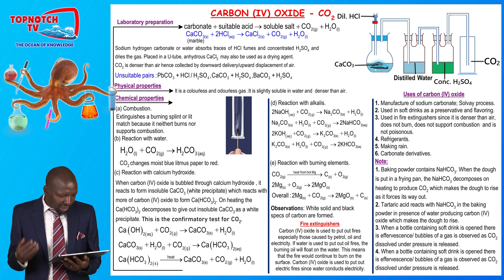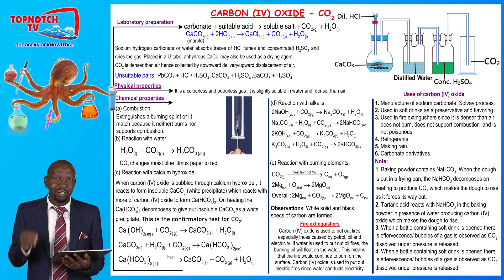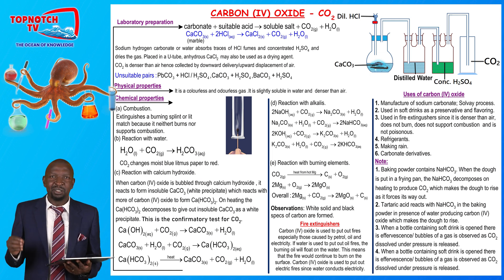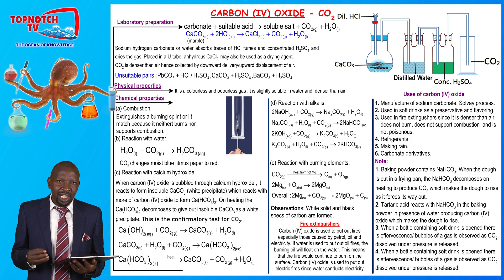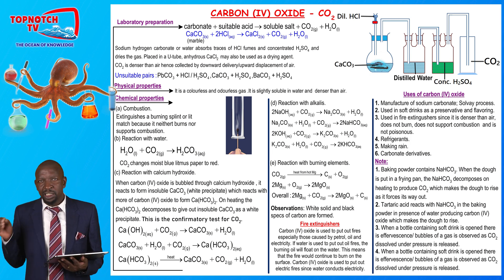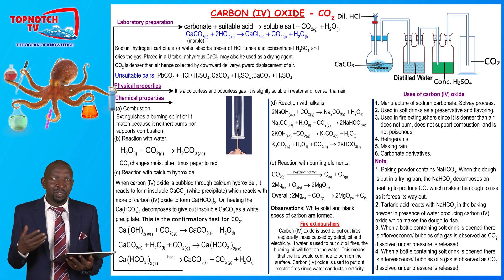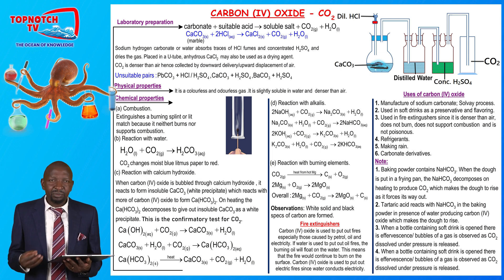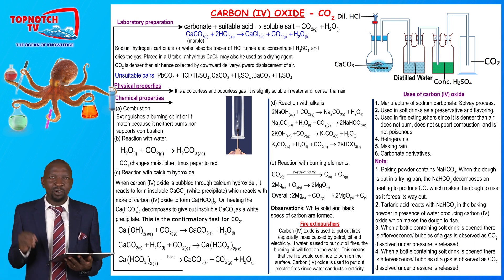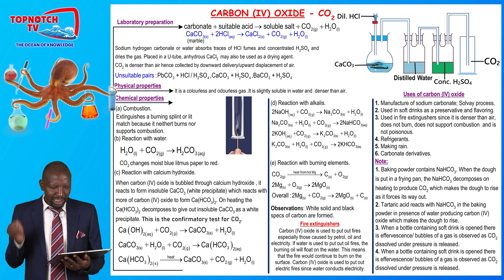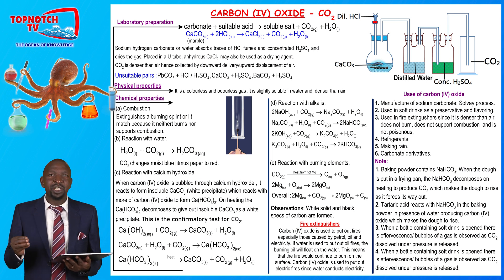Reaction with calcium hydroxide: carbon dioxide reacts with calcium hydroxide to form calcium carbonate, which appears as a white precipitate. If more carbon dioxide is bubbled through the resulting solution, the white precipitate dissolves to form a colorless solution. This is because carbon dioxide reacts with calcium carbonate in the presence of water to form calcium hydrogen carbonate, which is soluble.